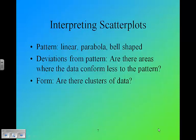When interpreting a scatter plot, we want to look for three things. Is there a pattern? Is it linear? Is there a parabola? Is it bell-shaped? What kind of pattern do we see? Secondly, we want to look for deviations from the pattern. Are there areas where the data conform less to the pattern? Are there clusters of data? What form does the scatter plot take? These are things you want to pay attention to and look for. When you see them, you want to write a complete sentence in context describing them, because that's what we're going to be looking for on a test.